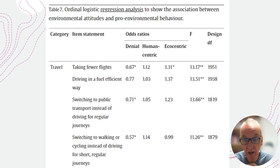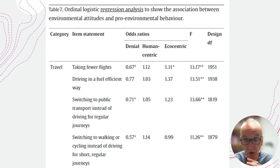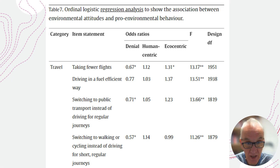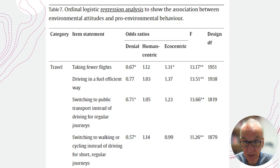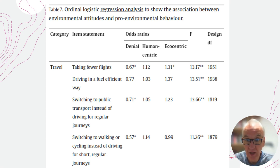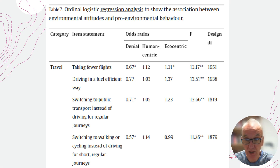We then ran a regression analysis on a number of behavioural variables as our responses, with the three factors as predictors. The denial factor came through really strongly as the highest predictor for environmental behaviours. Human-centric concern did not seem to matter at all, and the ecocentric factor was only slightly significant for one of the behavioural outcomes. Essentially, the denial factor is the biggest predictor of environment-related behaviour, in the direction you would predict.